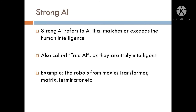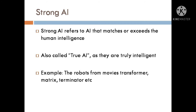We can differentiate between General and Narrow Intelligence. Artificial General Intelligence can handle any intellectual task thrown at it, but Narrow AI can handle only one task — the task for which it has been programmed. AGI systems currently exist in science fiction only. All current AI systems are narrow, and many scientists have abandoned work on Artificial General Intelligence due to lack of progress, while the Narrow AI field is booming.